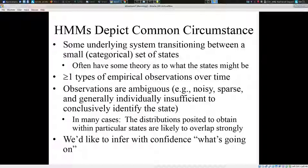Observations of one or more types are ambiguous — they're noisy, sparse, and generally insufficient to conclusively identify a state. If someone gave me a blood glucose test right now, it might give some understanding of my glycemic state, but it's very ambiguous because it's at a random point in the day. In general when we're dealing with system science methods, there might be observations based on accelerometer or gyroscope that suggest a low level of activity right now.